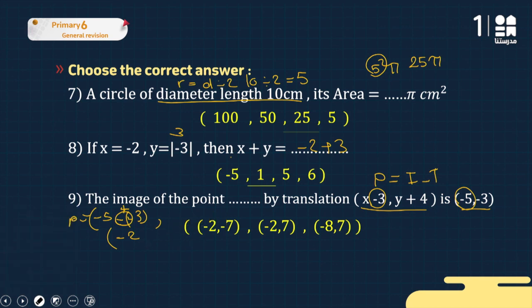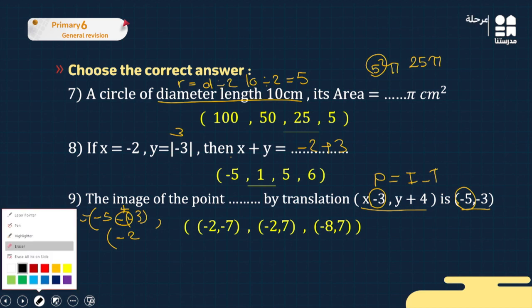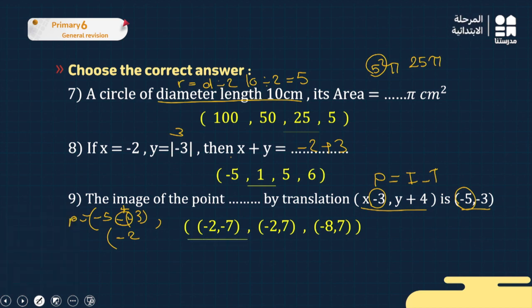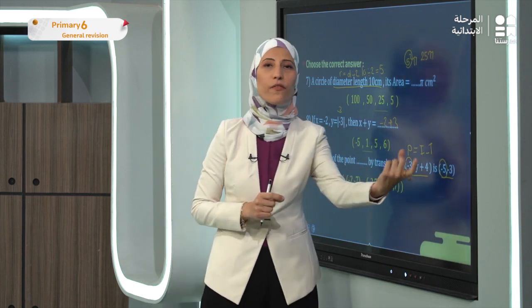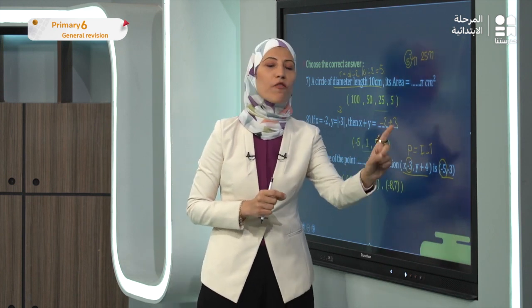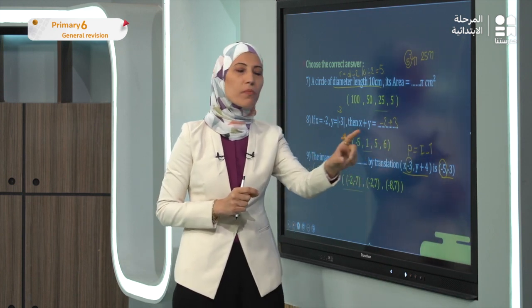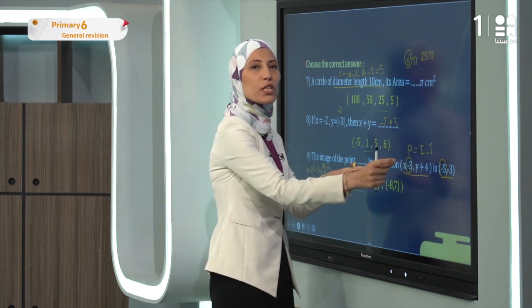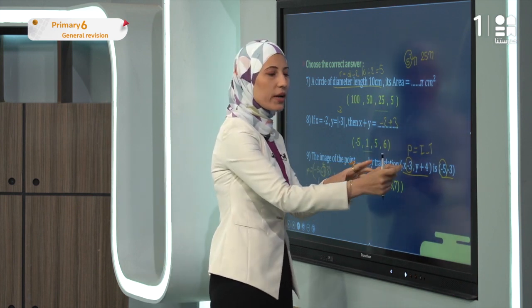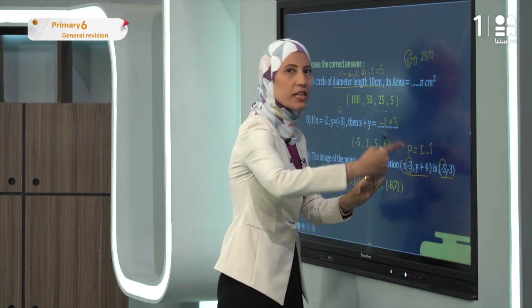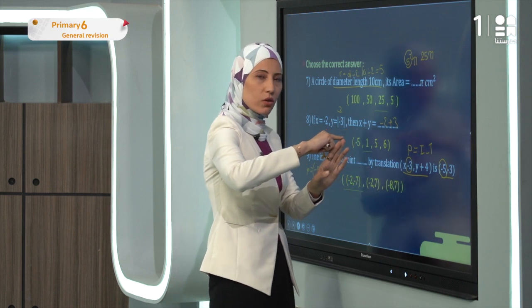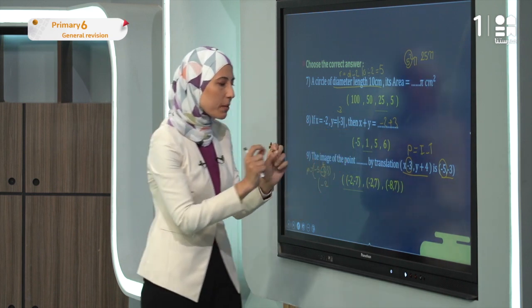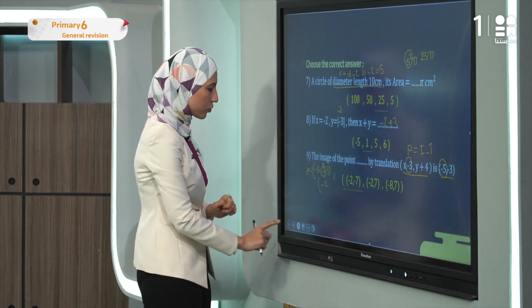The answer is (-2, -7). Be careful: the rule has a minus sign, so watch out for double negatives when the translation itself has a negative value.